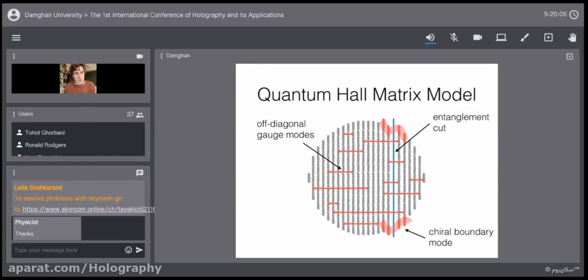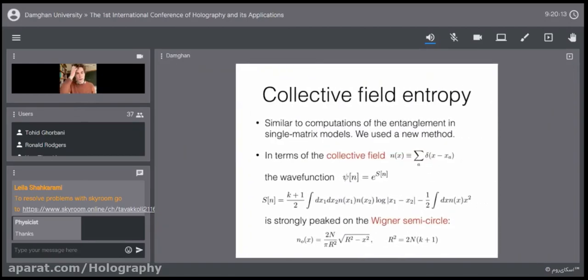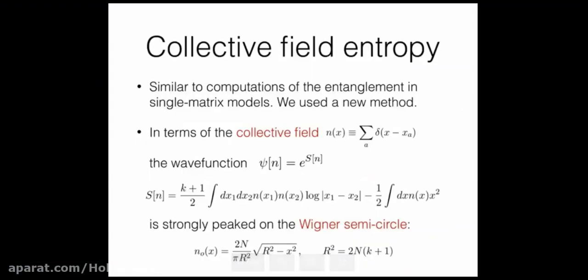Here's the picture — if you take one thing from this talk, this is it. We have eigenvalues of the matrix X; X doesn't commute with Y, so the eigenvalues of X are delocalized in the Y direction. The gray vertical lines represent eigenvalues of X. We're going to see that these eigenvalues distribute themselves in a circle — a droplet — and this circle is incompressible, so the excitations involve wiggles along the boundary (the red wiggles). That's the chiral boundary mode contributing to the entanglement. We cut the droplet at some fixed X (the blue line), partitioning the eigenvalues.